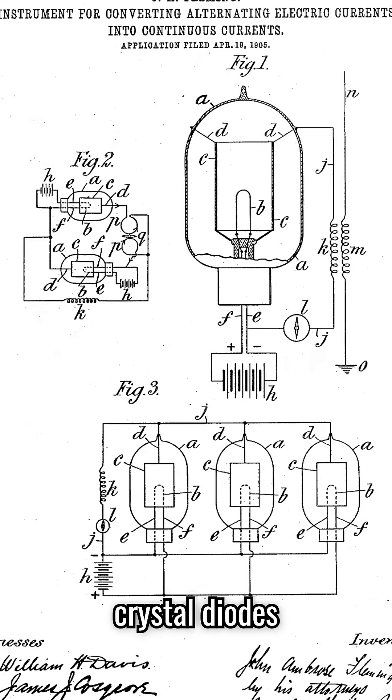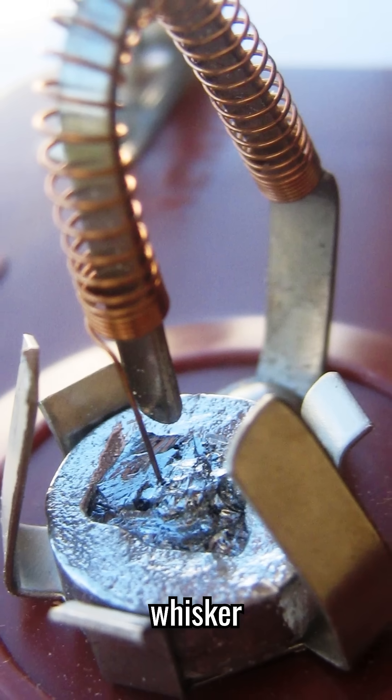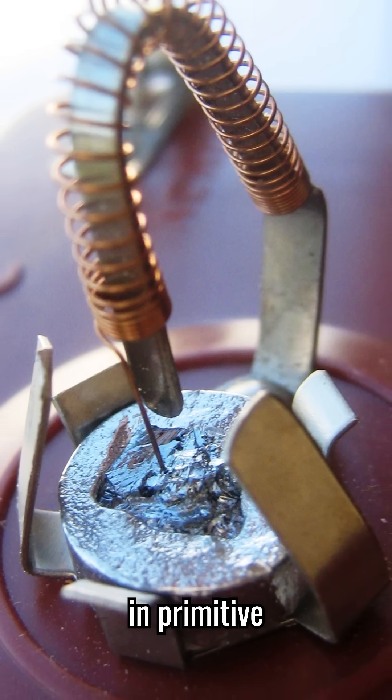By the 1930s, crystal diodes, like the cat's whisker detector, took center stage in primitive radios.